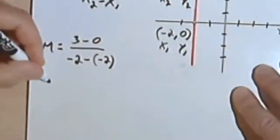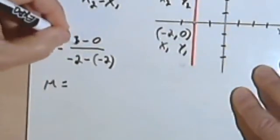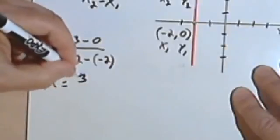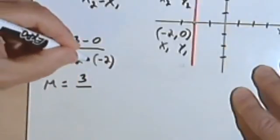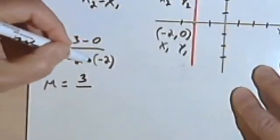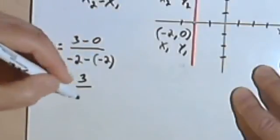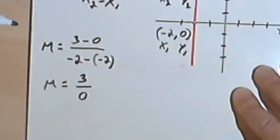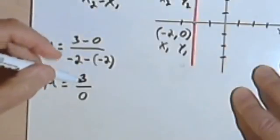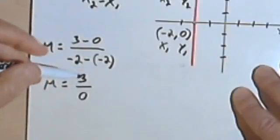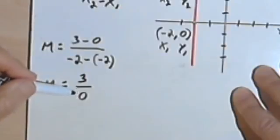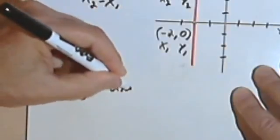So if we work this out, we're going to get the slope equals 3 minus 0 is 3. Negative 2 minus negative 2. Well, two negatives are a positive. So negative 2 plus 2 would just be 0. But you remember I can't divide by 0. This number in math, any fraction with 0 in the denominator, is undefined.